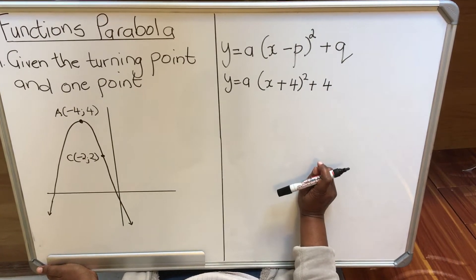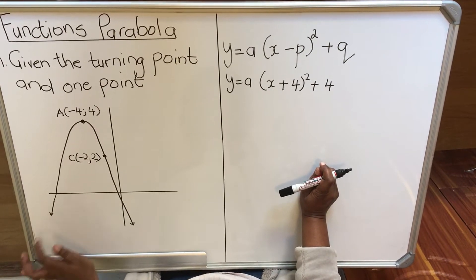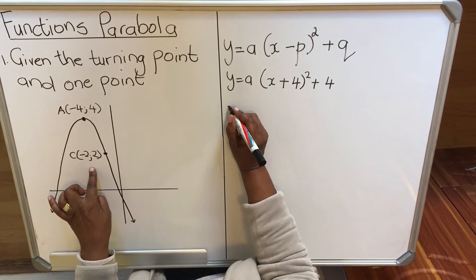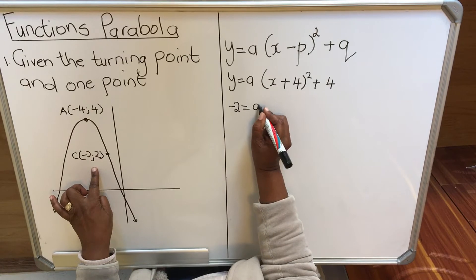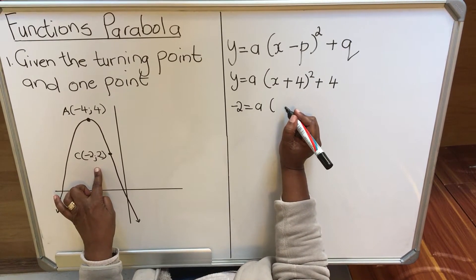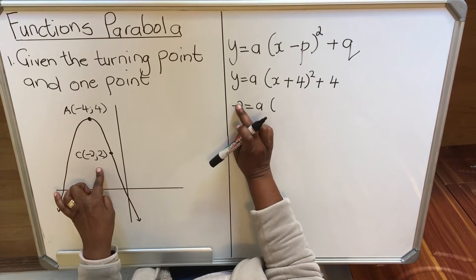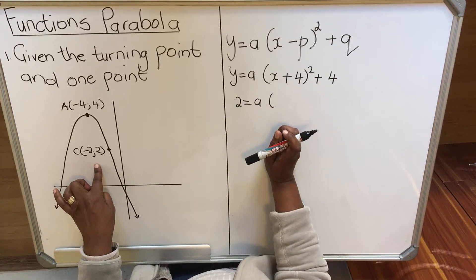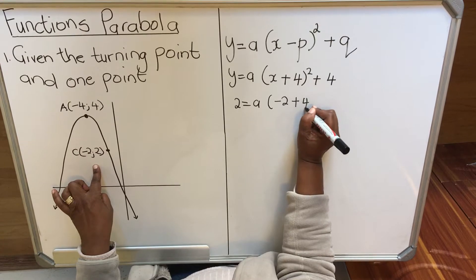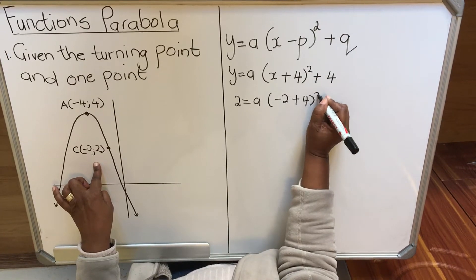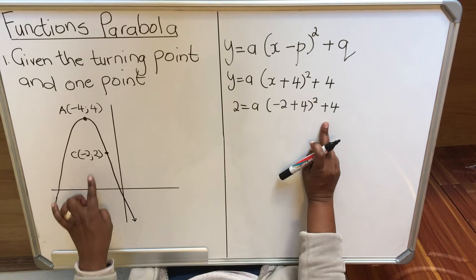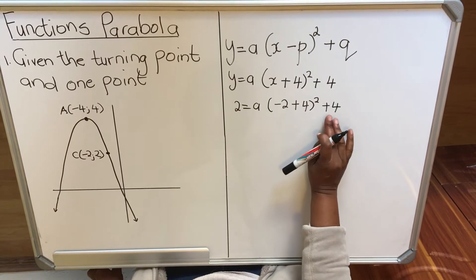Then the second part, you substitute the other coordinate. The other coordinate: my y is 2 and my x is -2. So you substitute: 2 = a(-2 + 4)² + 4, which gives a(1)² + 4.